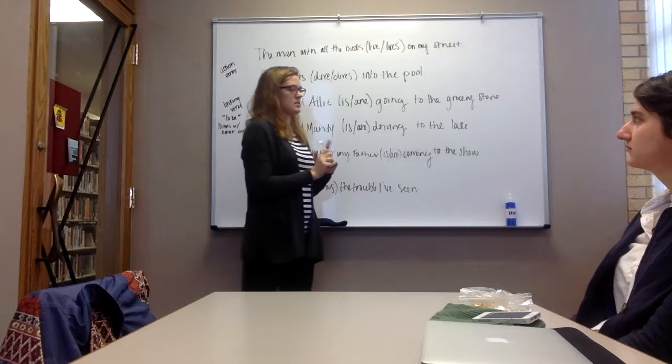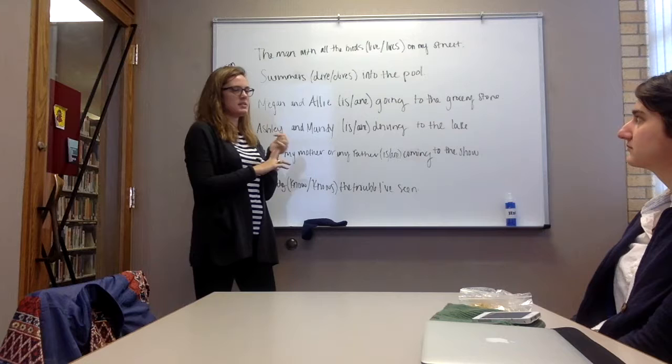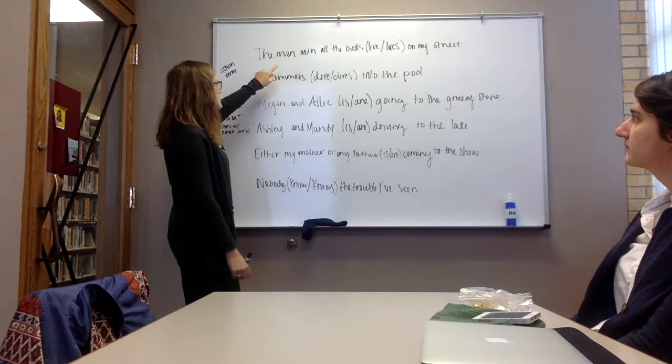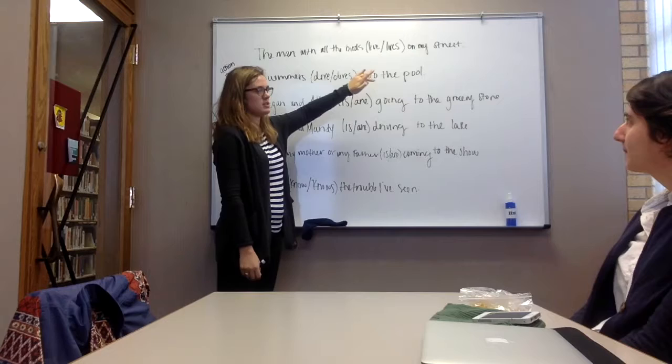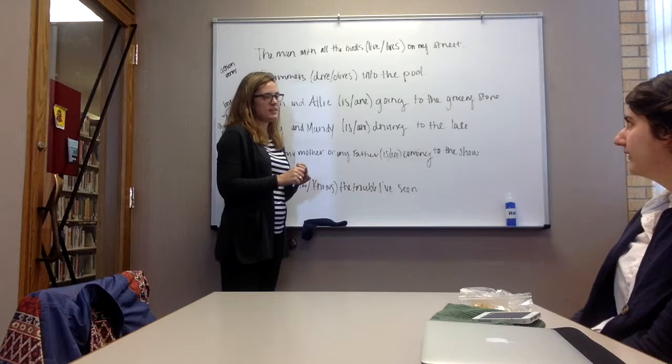So, we're going to go over two sentences today with that, and then if you could tell me the subject and then the correct verb. The first sentence is, the man with all the birds live or lives on my street. What is the subject and the verb for that? The man. Right.